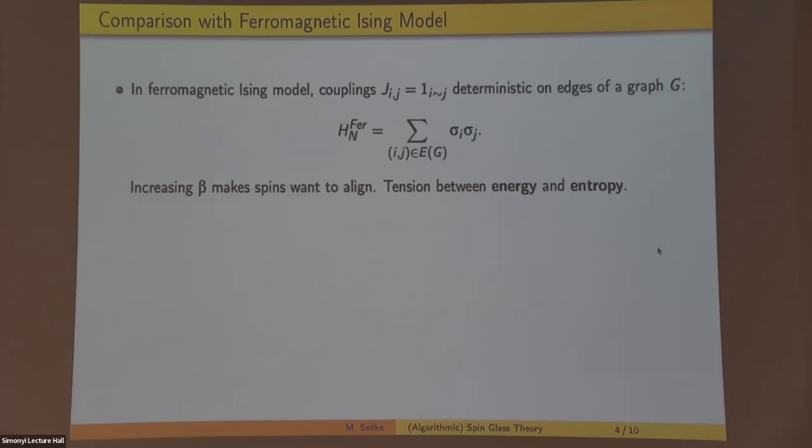Okay, so this is a bit different from the ferromagnetic Ising model, which some people might be more familiar with. In the ferromagnetic Ising model, one has positive deterministic couplings, maybe on the edges of a graph. In the case I'm talking about, we just have a complete graph. The energy is just the sum of pairwise products of adjacent spins. So in this model, the qualitative description of what happens is a bit simpler because when you increase beta, you just want nearby spins to align. So there's just a tension between energy and entropy. If you make beta very large, you'll kind of concentrate on very ordered states, and you expect that there's usually some phase transition between long-range order and long-range disorder.